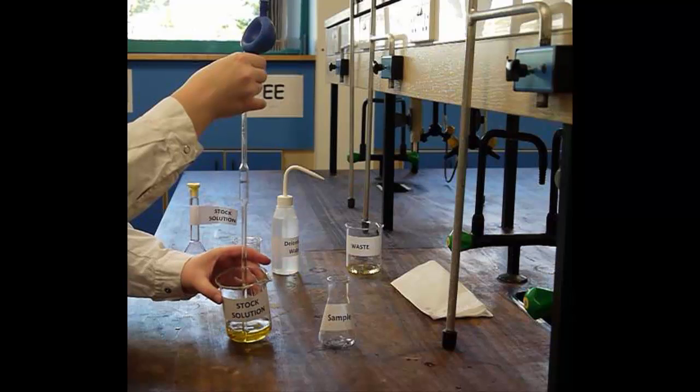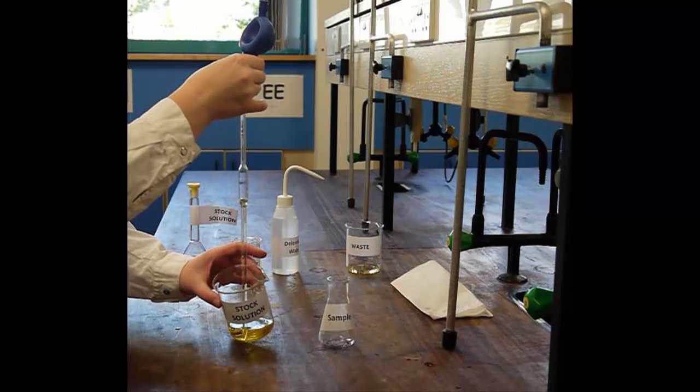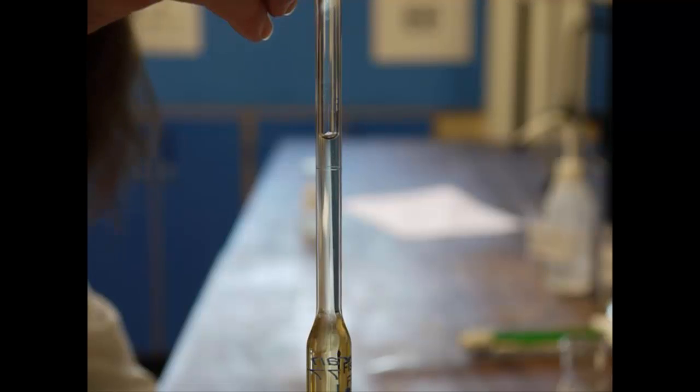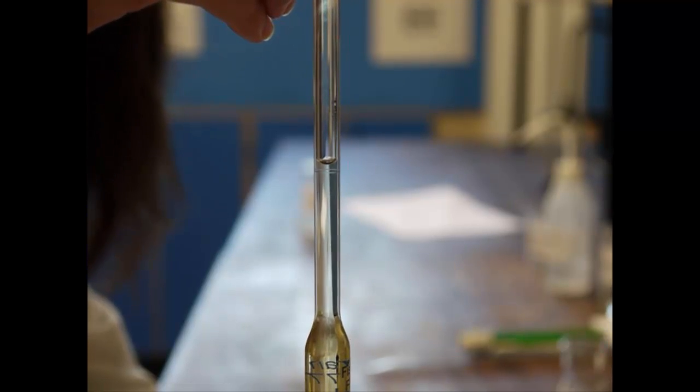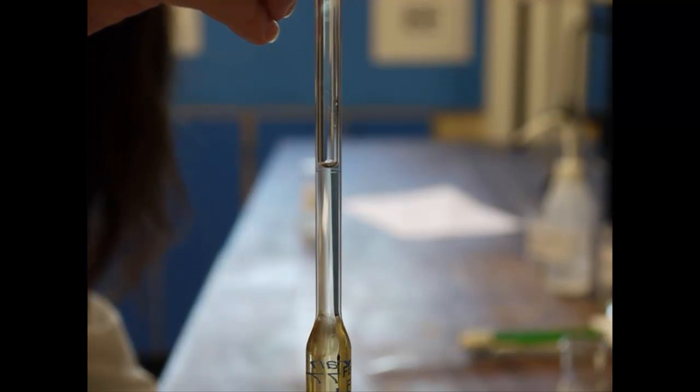Fill the pipette so that the solution goes above the graduation mark but not into the bulb. Drain the liquid so that the bottom of the meniscus is touching the graduation mark, reading this at eye level and ensuring the pipette is vertical.